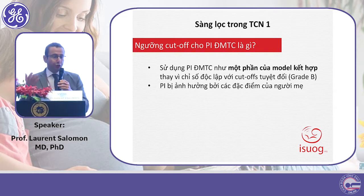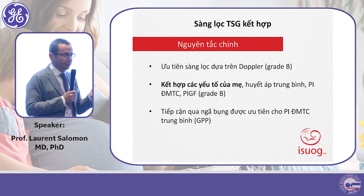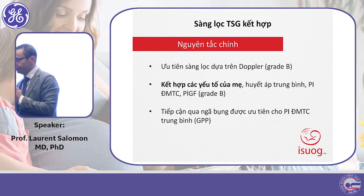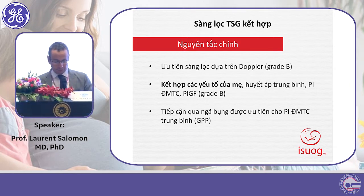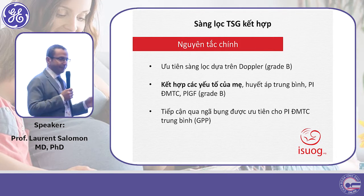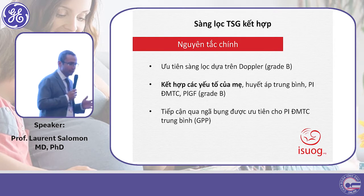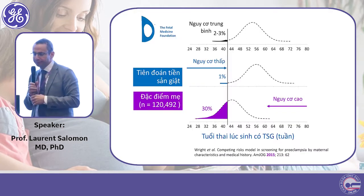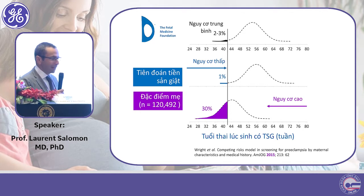A combined model allows you to use the mean uterine artery PI in combination with other important risk factors. The Fetal Medicine Foundation has developed a risk model for screening for preeclampsia called a competing risk model.